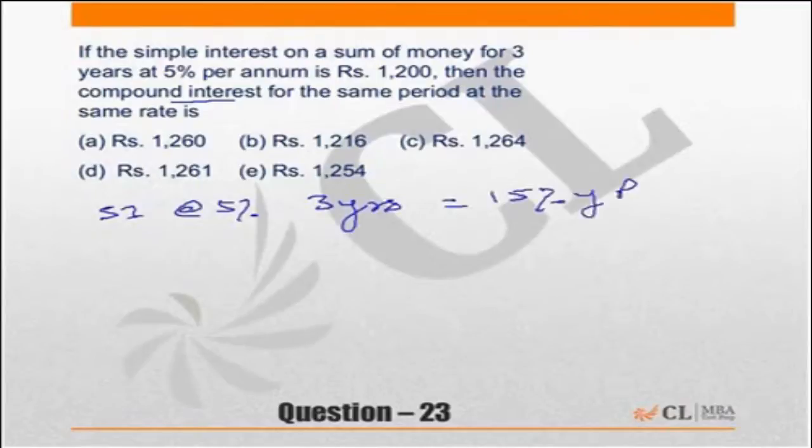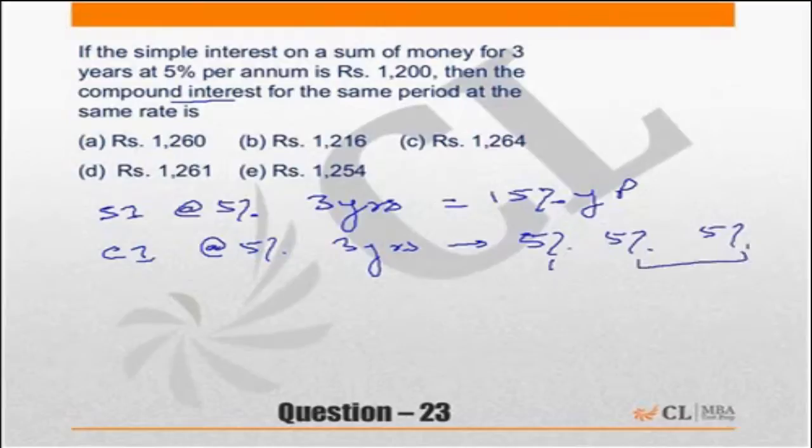Compound interest at 5% per annum is 3 successive increments of 5%. Two successive increments of 5% are equal to a single increment of 10.25%. Now, 10.25% and 5% will be 10.25 plus 5, plus how much does it become?